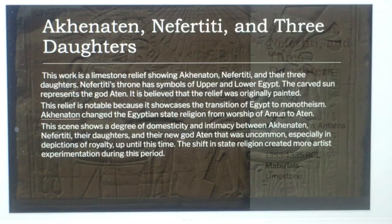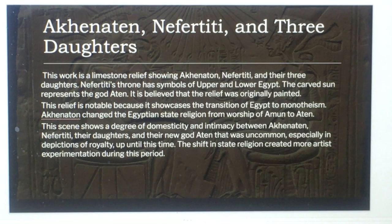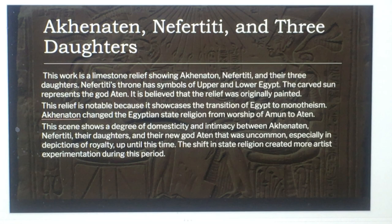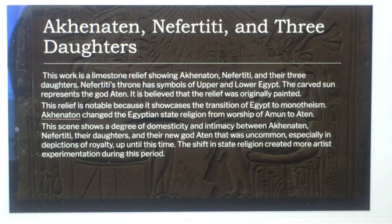This work is a limestone low relief — a bas-relief — showing Akhenaten, Nefertiti, and their three daughters. Nefertiti's throne has symbols of upper and lower Egypt. The carved sun represents the god Aten, and it is believed the relief was originally painted. This relief is notable because it showcases the transition of Egypt to monotheism.